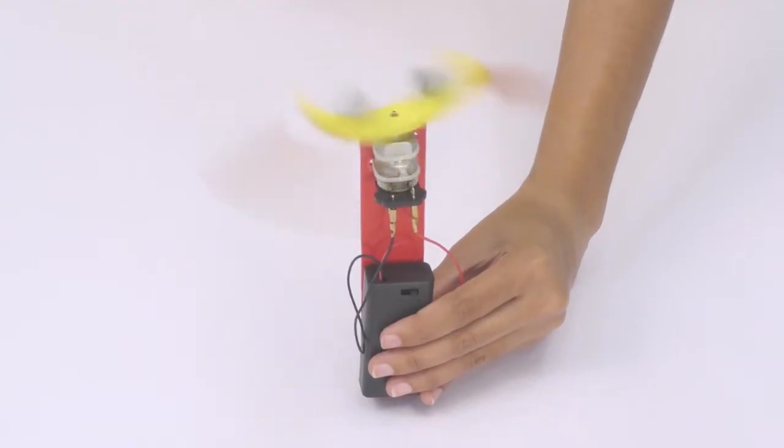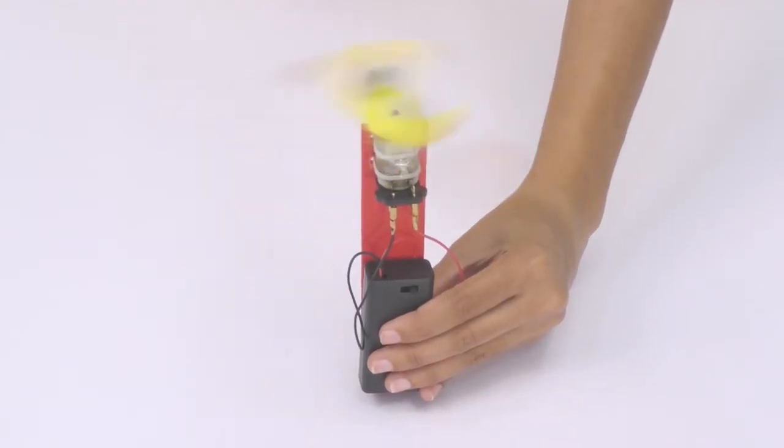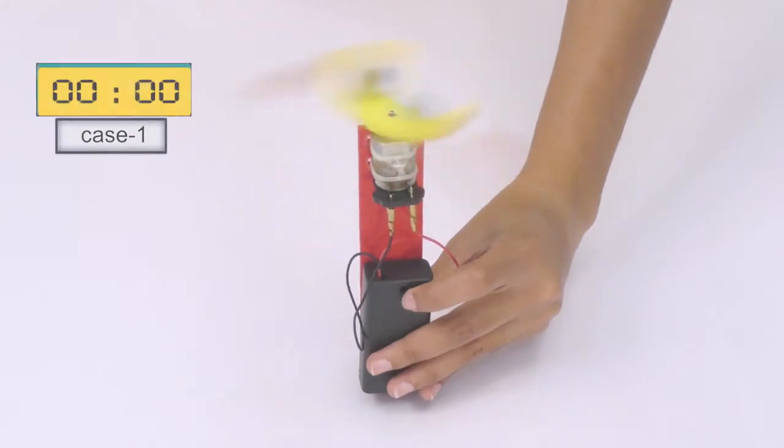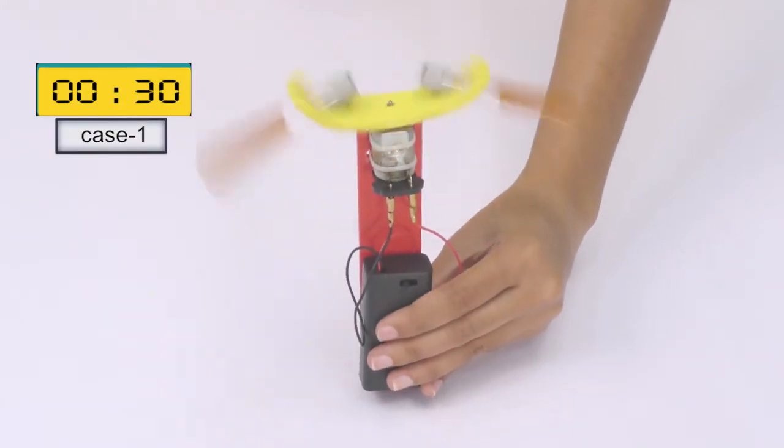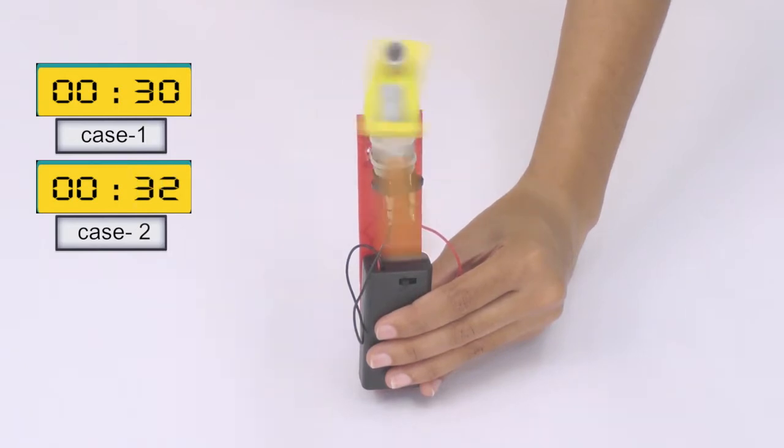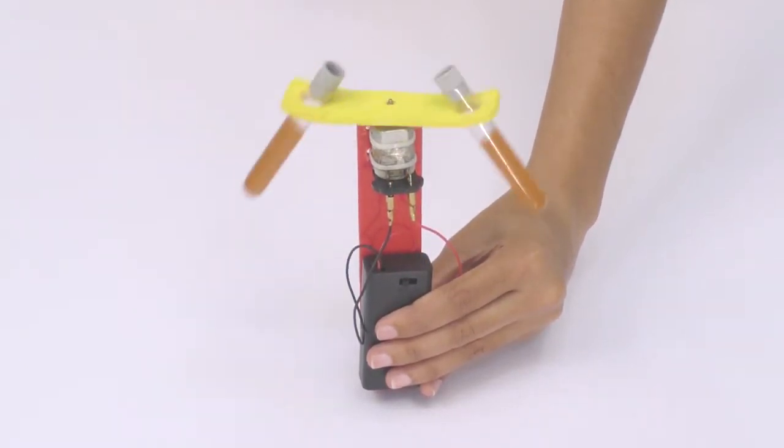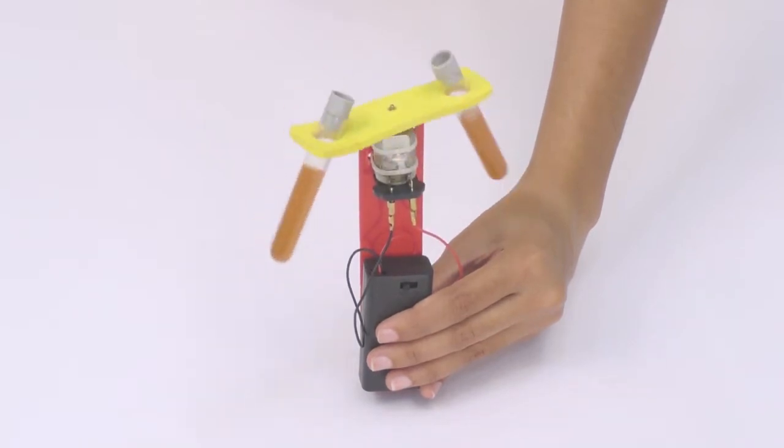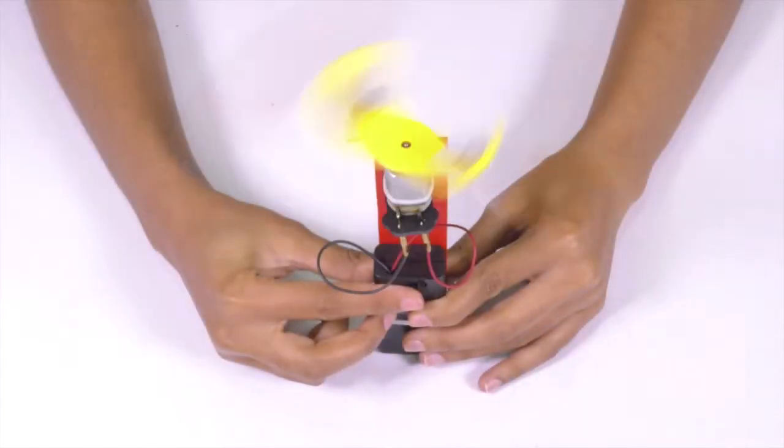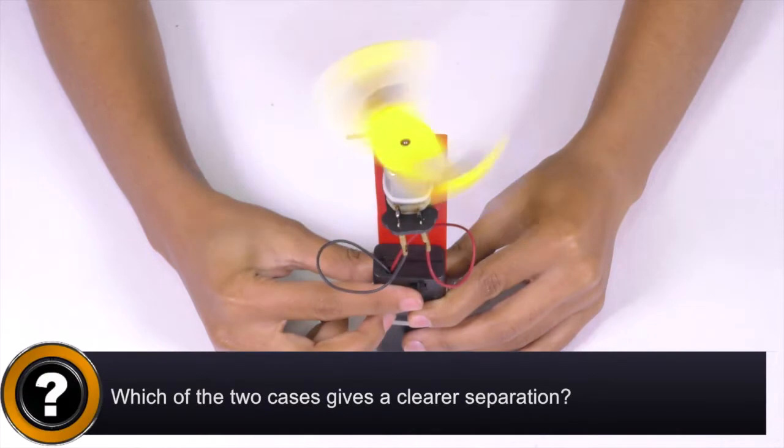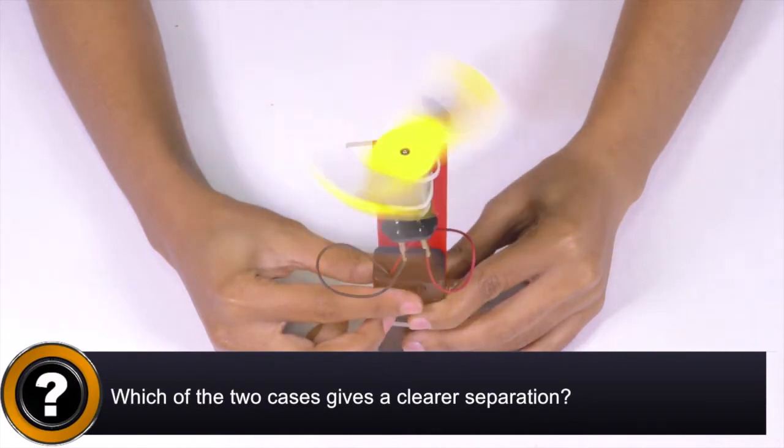Now, turn on the centrifuge assembly again and run the mixture for 30 seconds and 60 seconds respectively and note down the difference in the clarity of the mixtures. Which of the two cases gives a clearer separation?